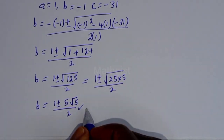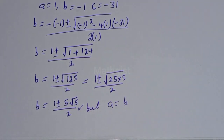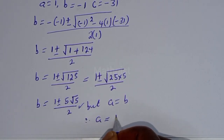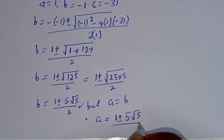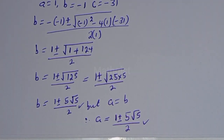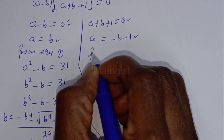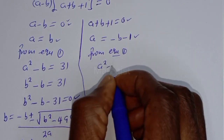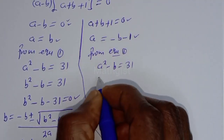This is the value of b, but since a = b, we also have a = (1 ± 5√5) / 2. Now let's consider the second case. From equation 1, with a = -b - 1, we have (-b - 1)² - b = 31.